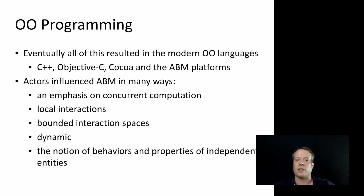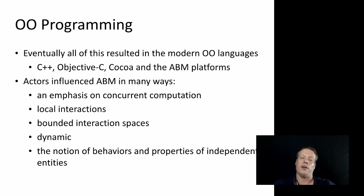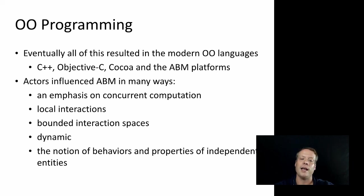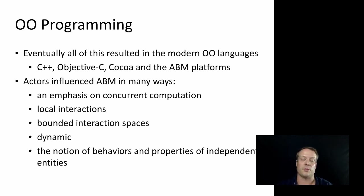Eventually all of this resulted in the modern object-oriented languages like C++, Objective-C, Java, and a lot of the ABM platforms we look at today. Actors have particularly influenced ABM in a number of ways: the emphasis on concurrent computation, forced local interaction spaces, bounded interactions between individuals, and a dynamic nature requiring constant updating of address lists. It kept the notion that behaviors and properties existed within an independent entity, not as a property of the global system.